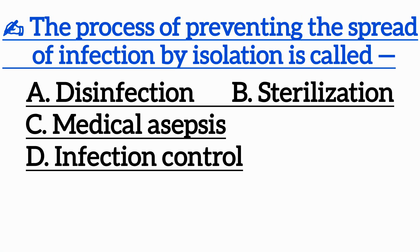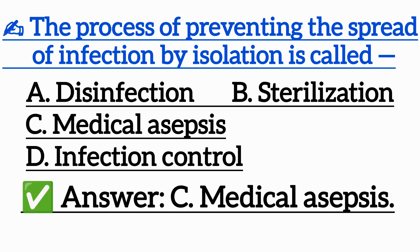Question 13: The process of preventing the spread of infection by isolation is called — Option A: Disinfection, Option B: Sterilization, Option C: Medical asepsis, Option D: Infection control. Correct answer is Option C: Medical asepsis.